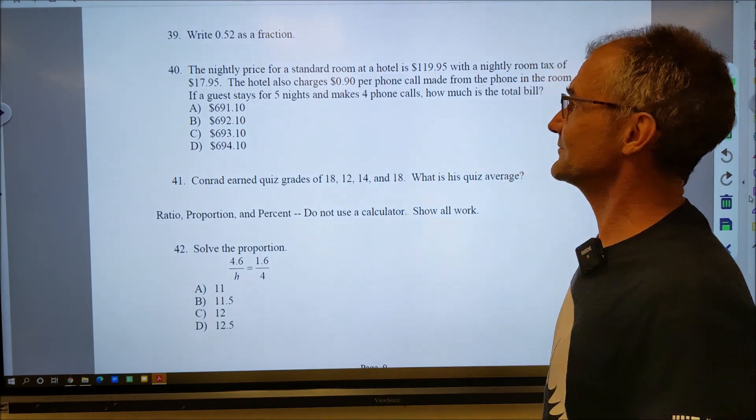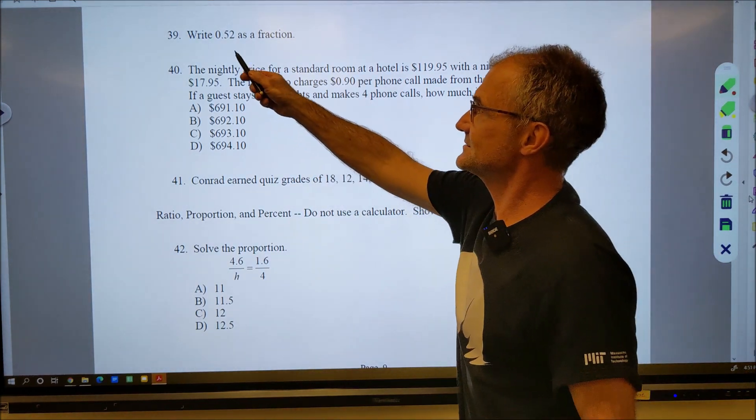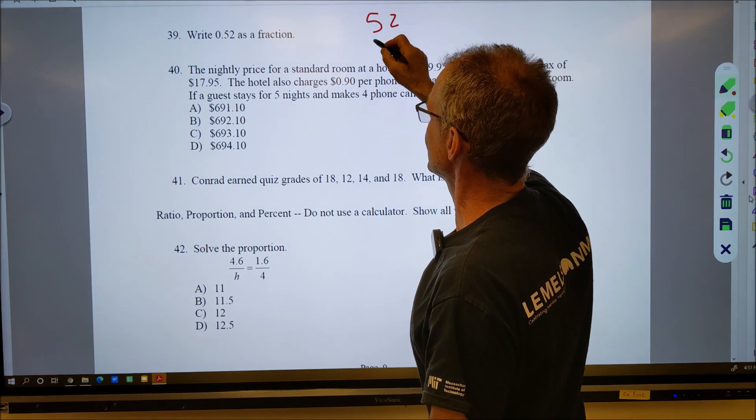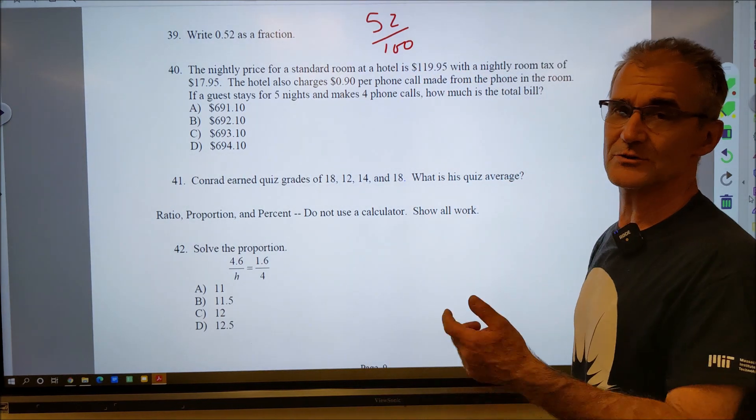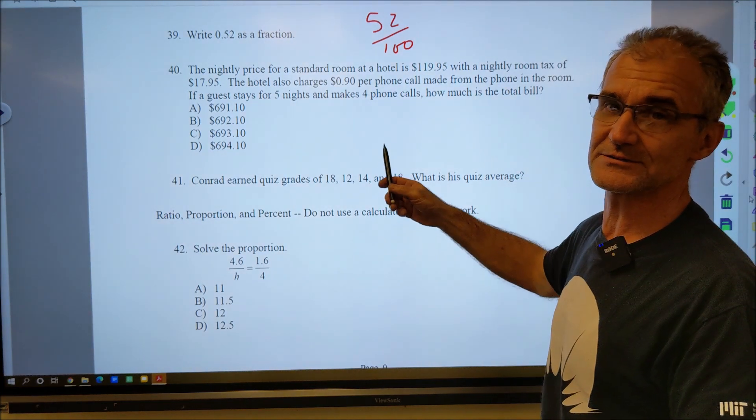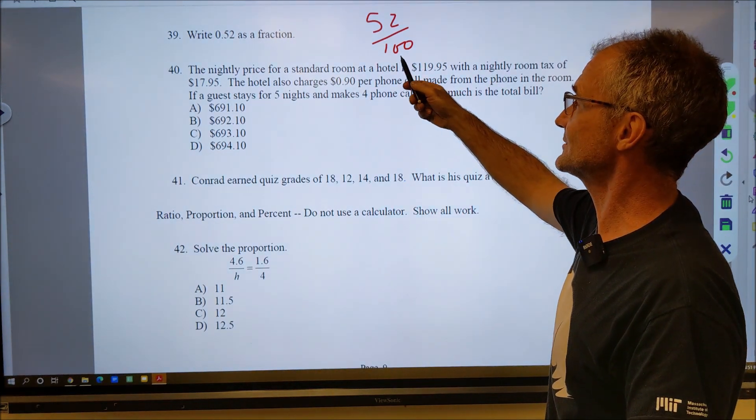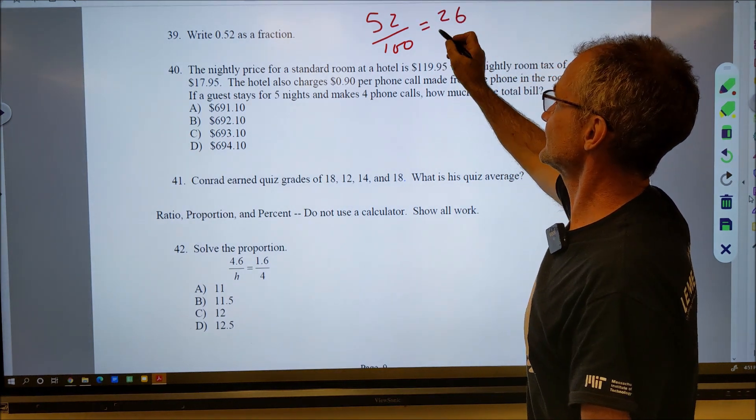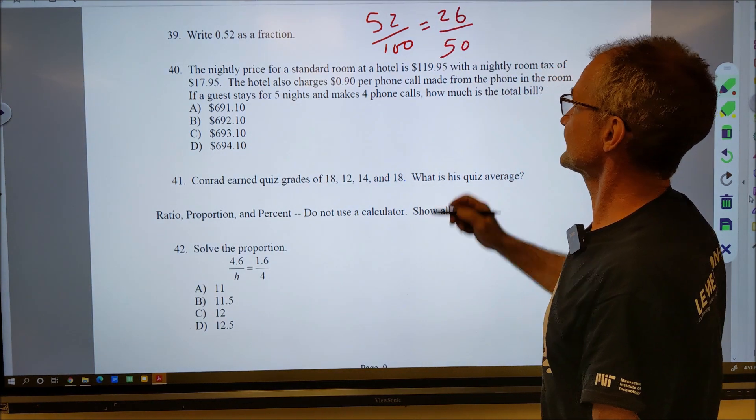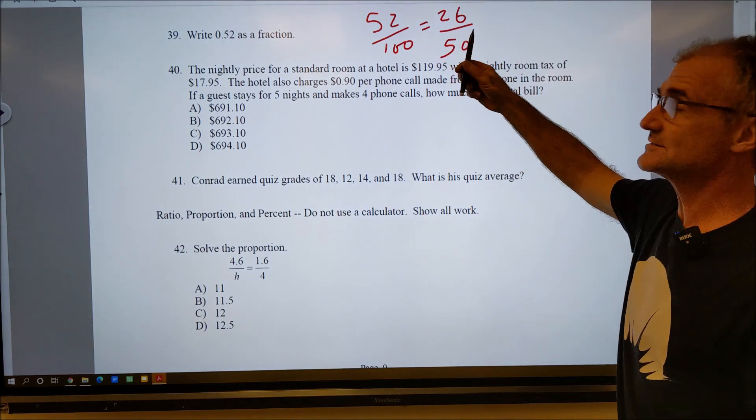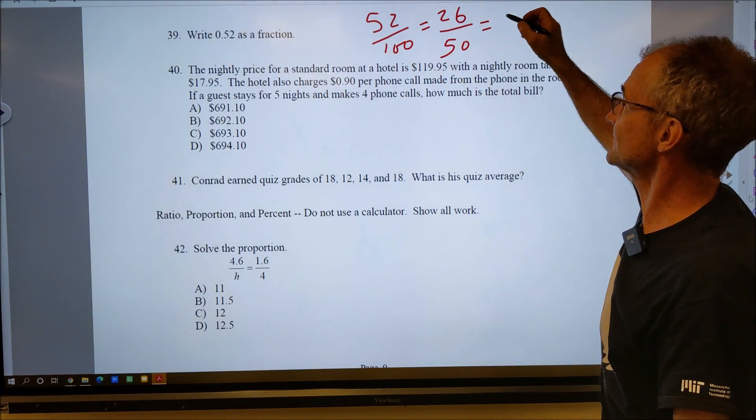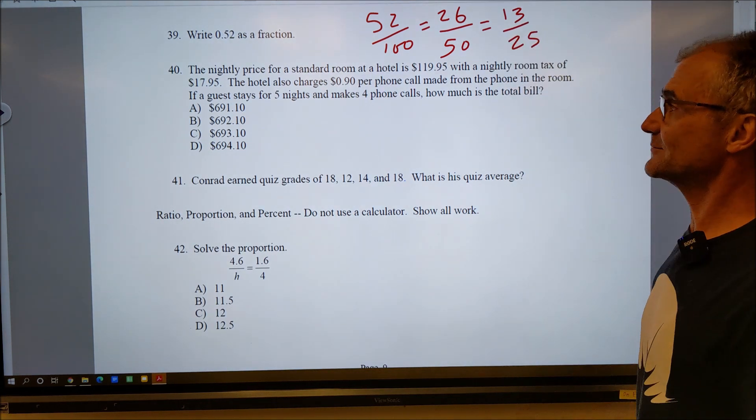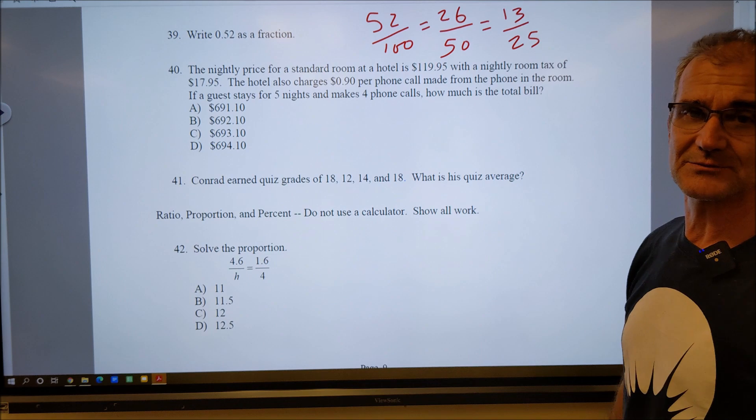Number 39: Write 0.52 as a fraction. Well, this is the tenths place, this is the hundredths place, so that is 52 one-hundredths as a fraction, and then you always reduce it. First thing you want to do is see if two will go into both of those numbers. So two will go in there 26 times and into there 50 times. I'm going to try that again. They're both even, so they'll both reduce again. Two will go in there 13 times and there 25. That's a prime number, can't be reduced any more than that.